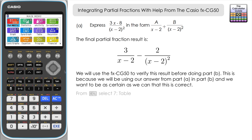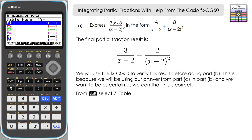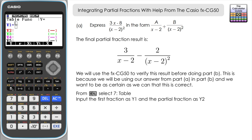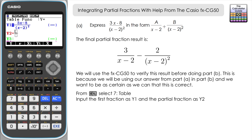We go to table mode (mode 7) on the calculator and input two functions. Y1 will be the original fraction: (3x − 8) over (x − 2)², entered using the x-theta-T button. Y2 will be the partial fraction form: 3 over (x − 2) minus 2 over (x − 2)². We press execute to enter each function and then prepare to generate a table.